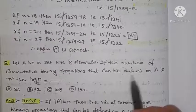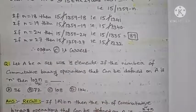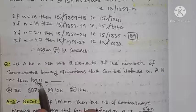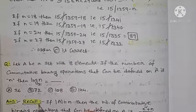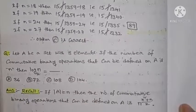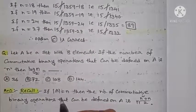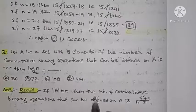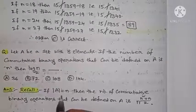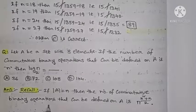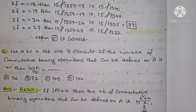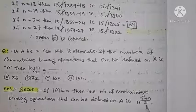The question is about finding the number of commutative binary operations that can be defined on a set with 8 elements. That number is given by N, and we have to find log N base 2. We have a standard formula: if the cardinality of A is n, meaning A is a set with n elements, then the number of commutative binary operations that can be defined on A is n to the power (n² + n) / 2.